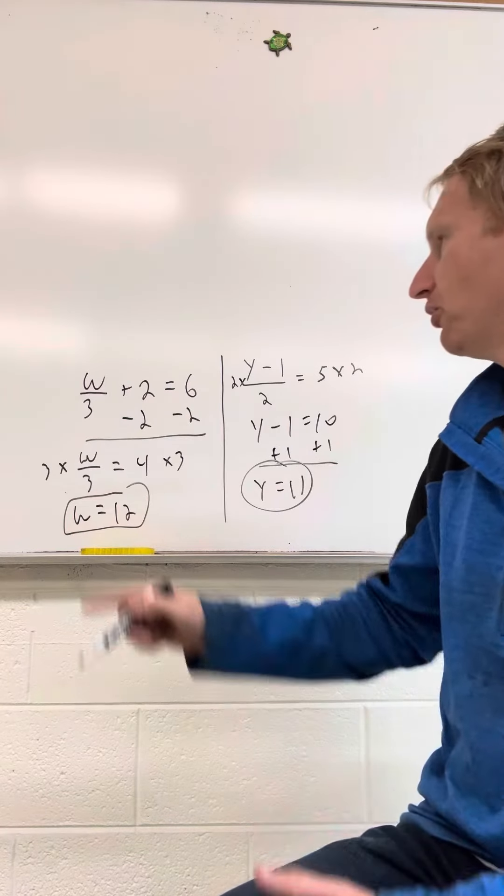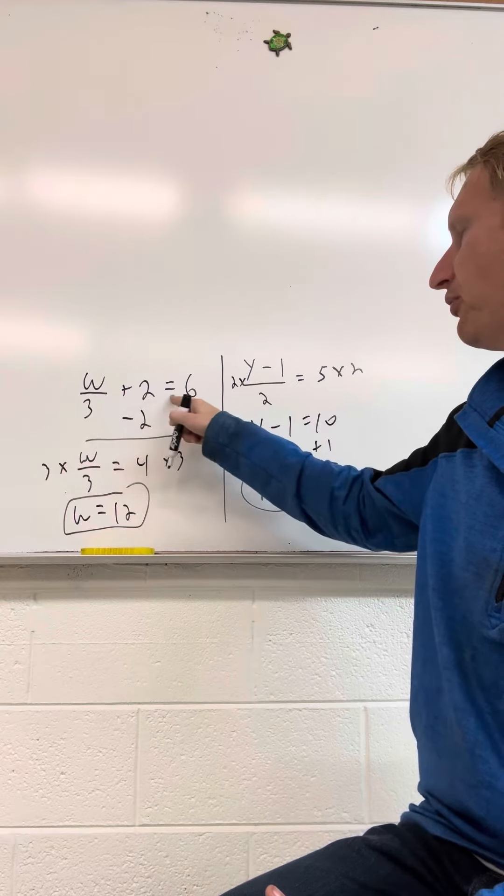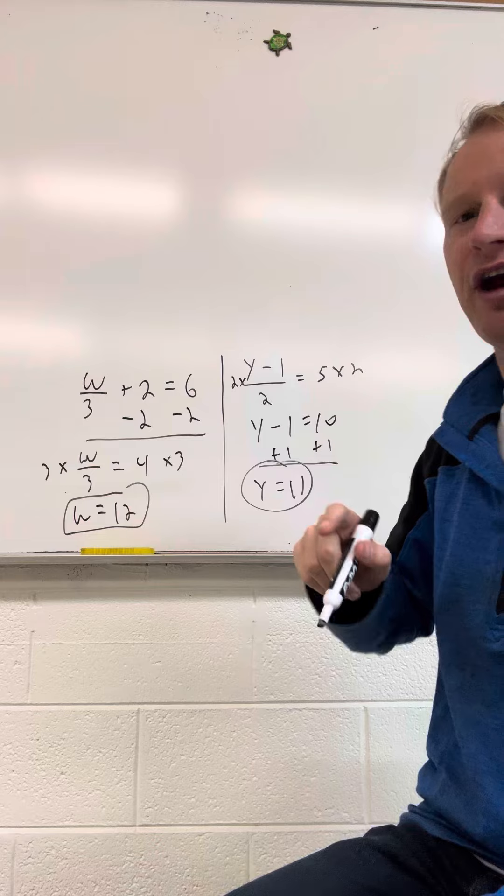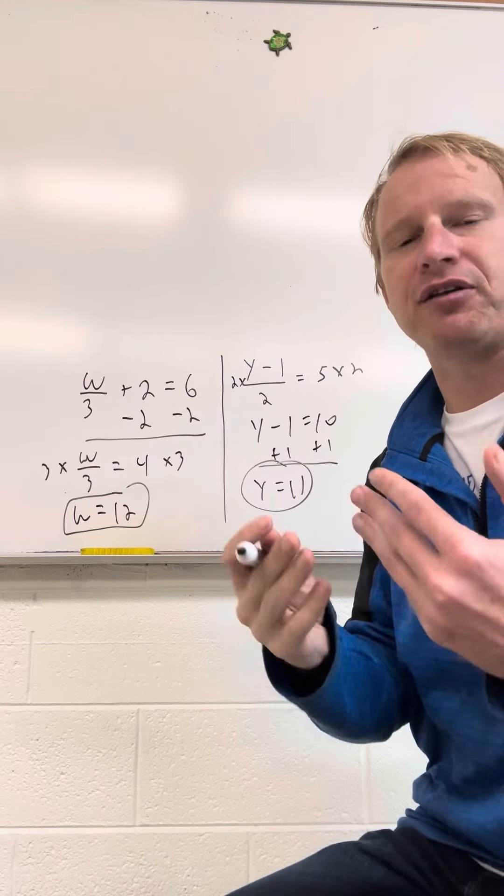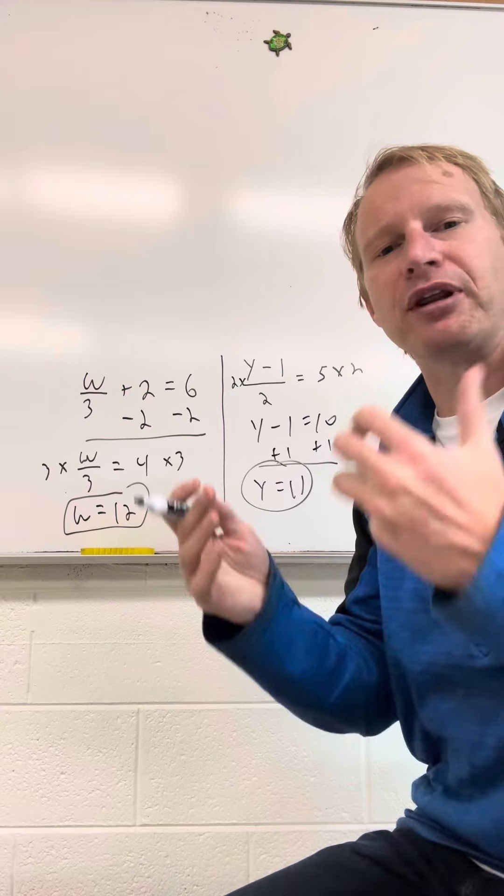Note the difference here between the two. Here, when you have a fraction plus a number, take care of this number first by subtracting it from both sides. And here, when it's the entire side divided by a number, you multiply both sides first. That makes a big difference. You're essentially undoing the order of operations.